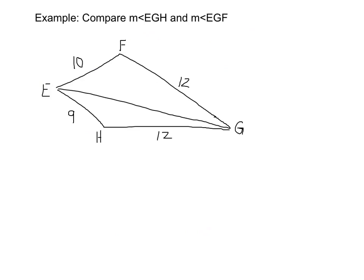Here's an example using the converse. We have to compare the measurement of angle EGH and the measurement of angle EGF. Looking at this, I see two triangles. We can see that 12 is congruent to 12, so segment FG is congruent to segment HG. Another side I see is EG congruent to EG — that's through the reflexive property.